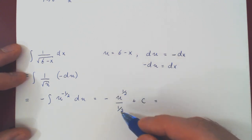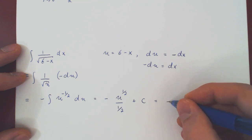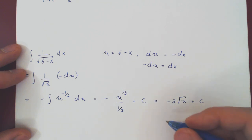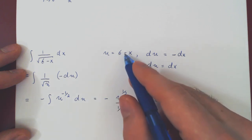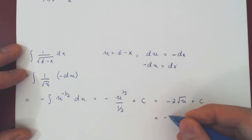We can, of course, simplify. 1 over 1 half is 2. That's negative 2 root of u, plus c. And finally we go back to a function of x. This is negative 2, the root of 6 minus x, plus c.